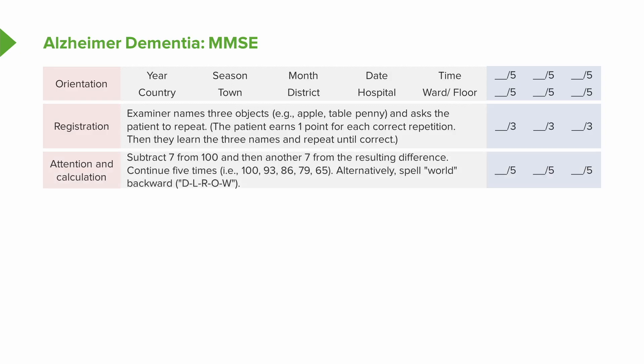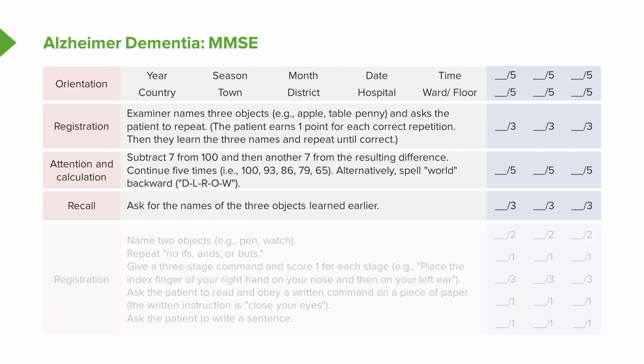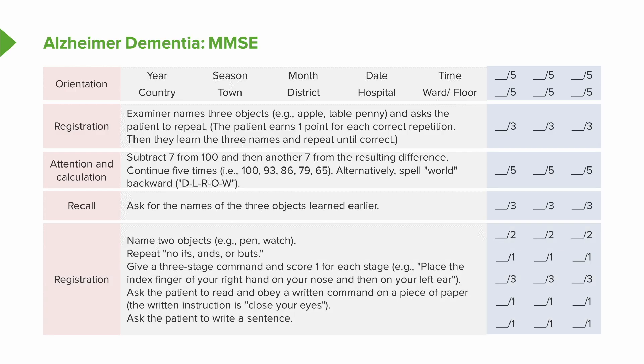We look at attention and concentration with serial sevens, spelling 'world' backwards, or reciting the months of the year forwards and backwards — looking to see whether the patient is able to remain on task throughout the entirety of that task. Fourth is recall: can the patient remember those three words at five minutes? We're looking for short-term memory dysfunction. Lastly, we look at naming and language, asking the patient to name and repeat as well as follow commands, looking for issues with aphasia.